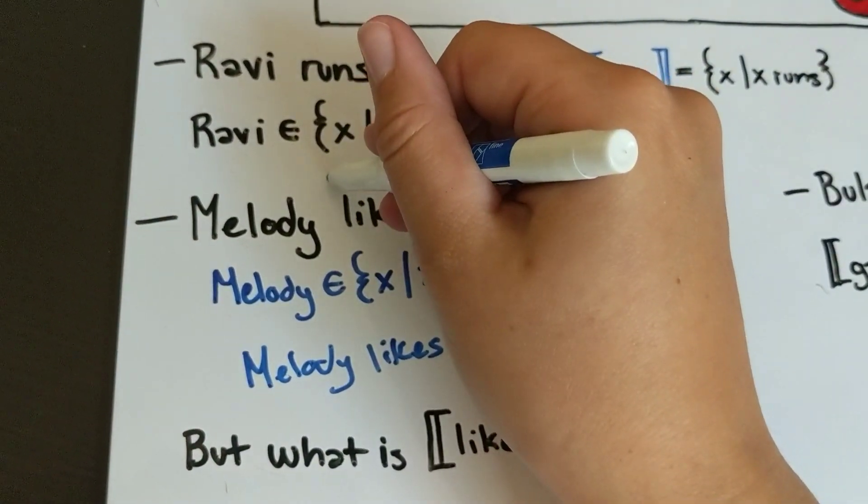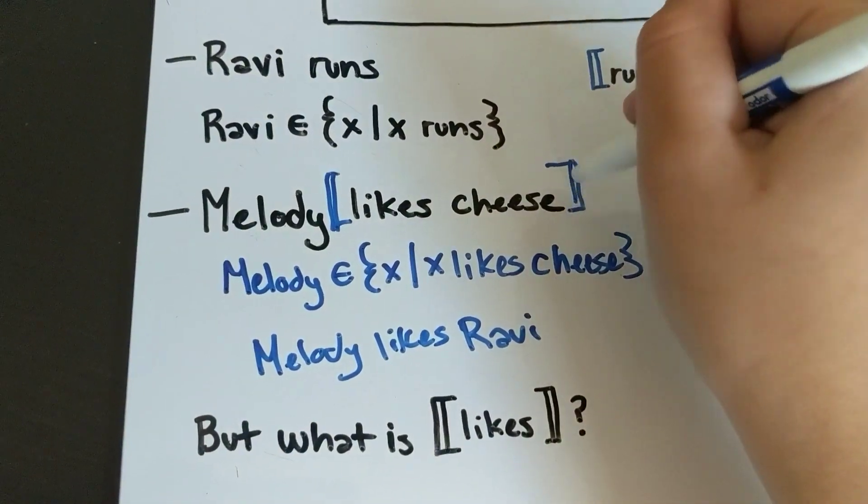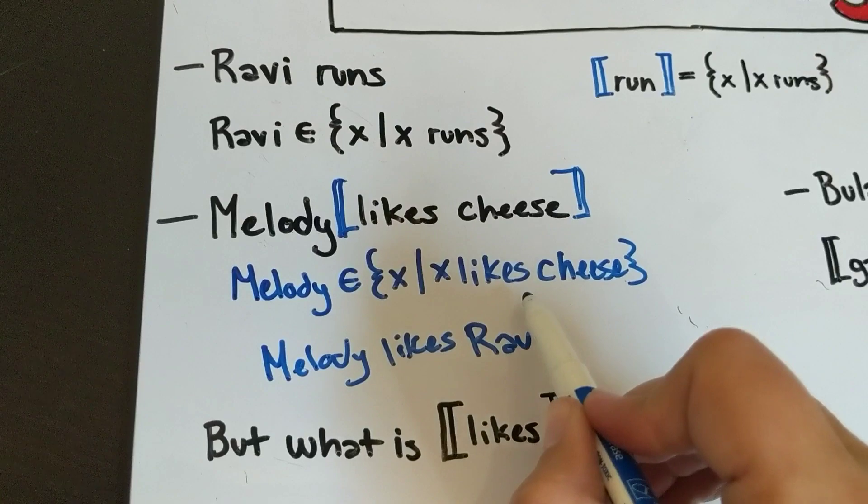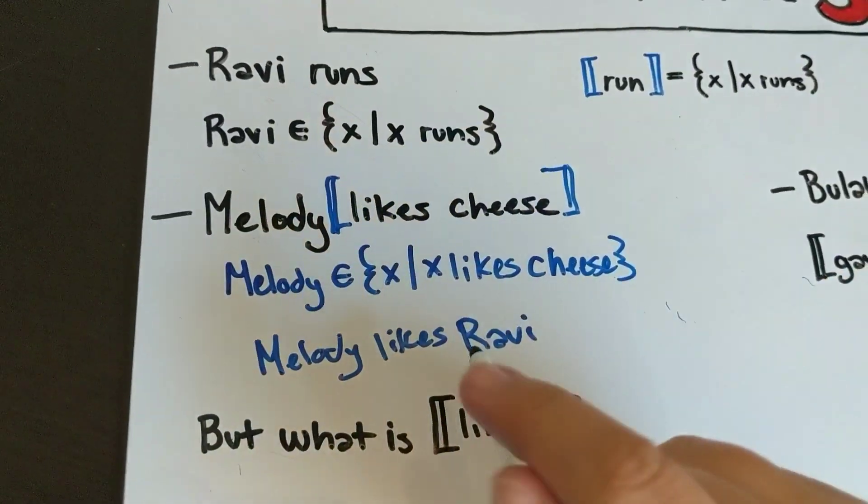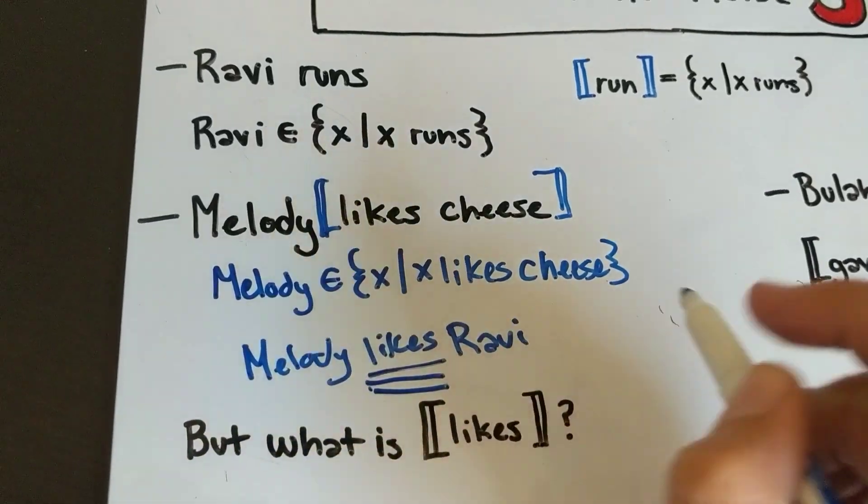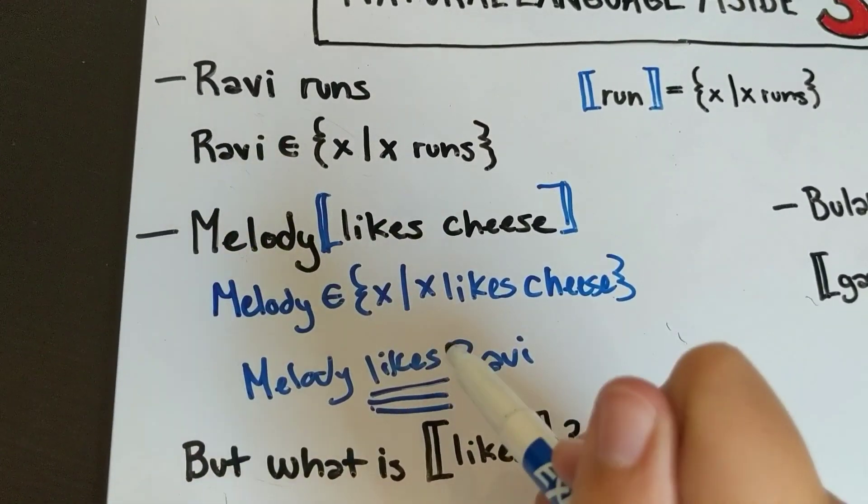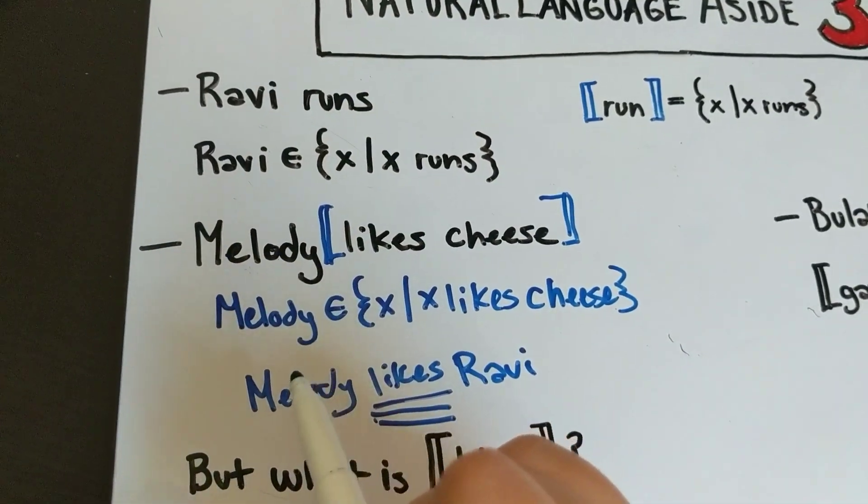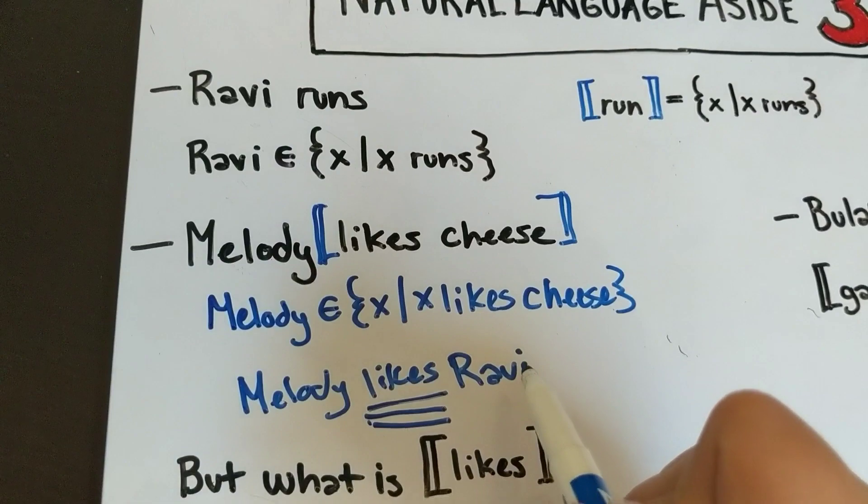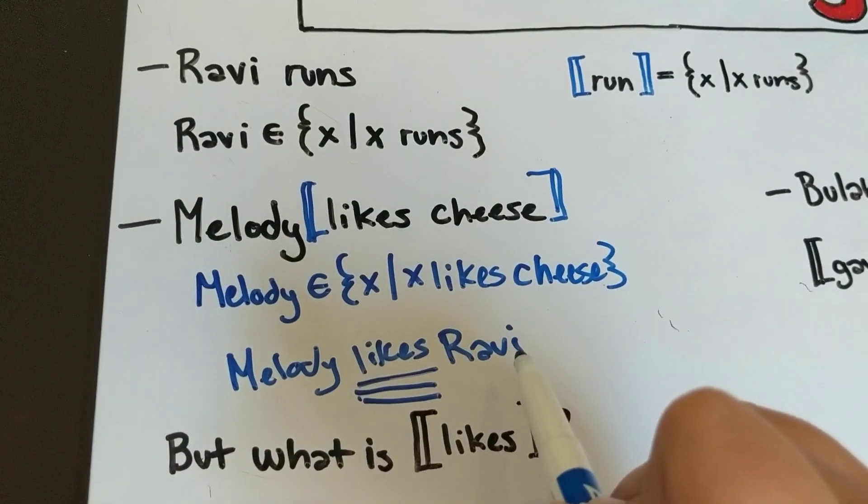...this, which is the set of things x such that x likes cheese, then we don't have a nice way to deal with the meaning of the word 'likes' where we can switch out the object. That's really what we want to be able to do: have a meaning for 'like' that can accept both an object and a subject. Both the thing that is doing the liking and the thing that is being liked have to go into this thing.